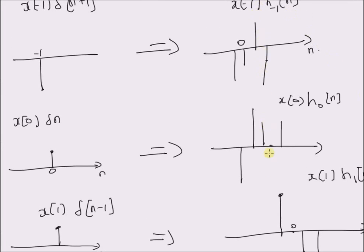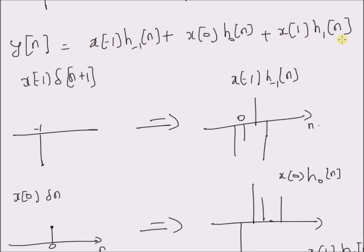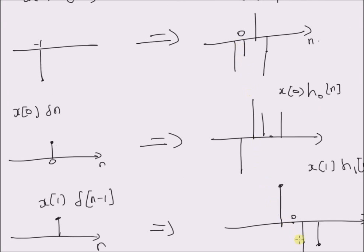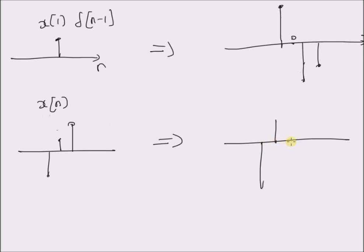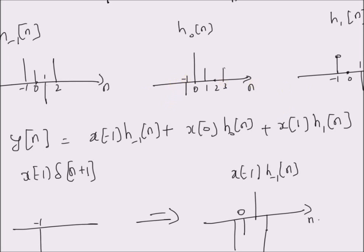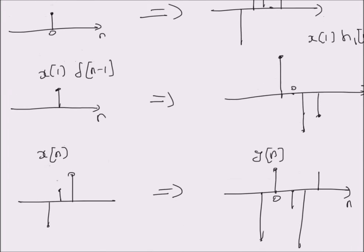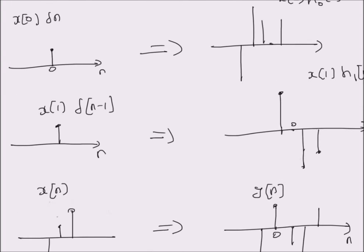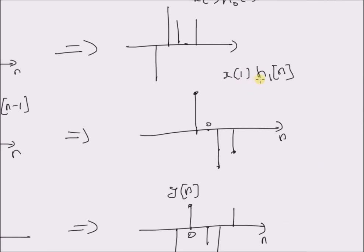The actual output y(n) is basically the sum of these three separate outputs. Therefore, for the input x(n), the corresponding output is given by the sum of these three sequences. This is the axis n, this is 0, and this output is the final y(n). For a linear system, once the impulse responses at different values of k are known, we can easily calculate y(n) by evaluating x(k)·h_k(n) and then adding up all the values for different values of k.